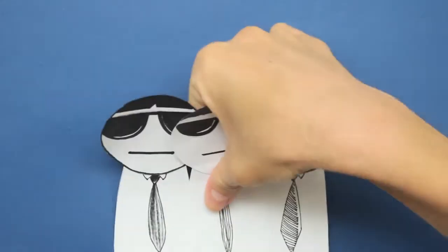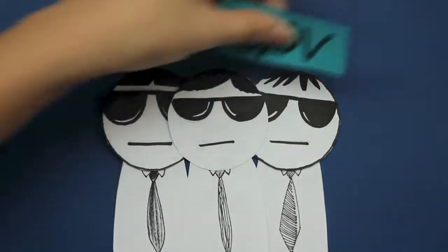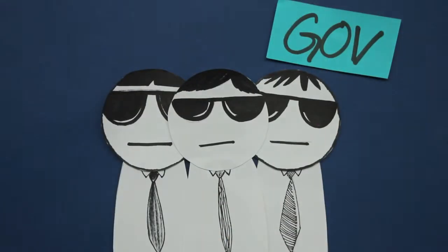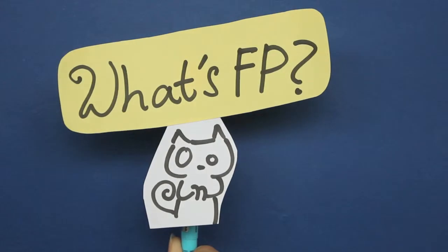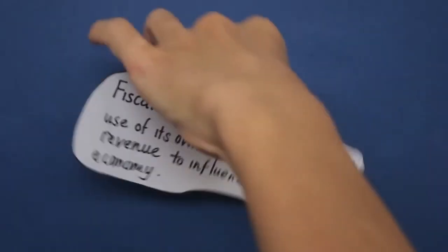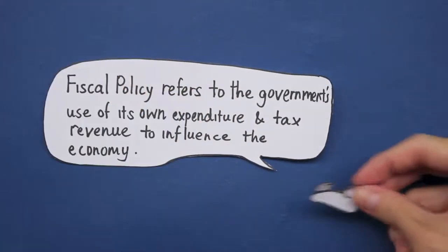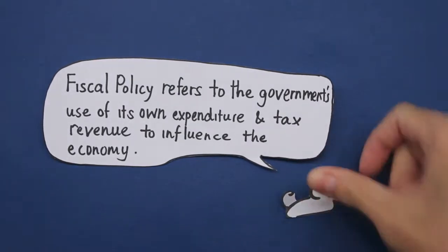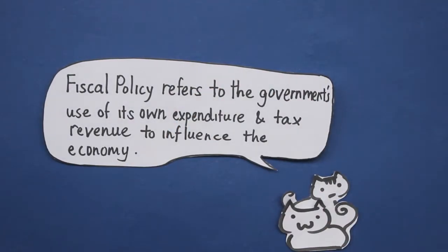This is where the government comes in. The government will use policies, like fiscal policy, to help reduce unemployment. Fiscal policy refers to the government's use of its own expenditure and tax revenue to influence the economy.